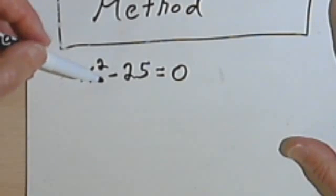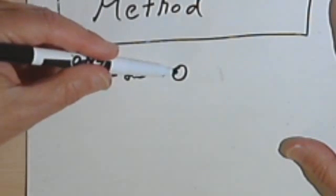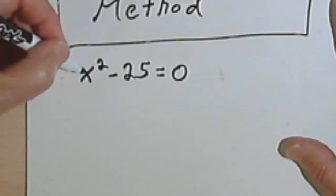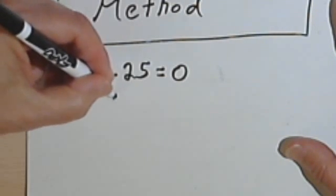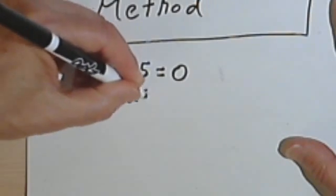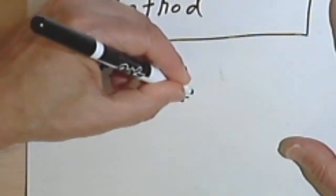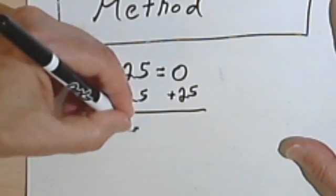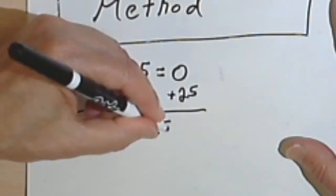I've got x squared minus 25 equals 0 and I want to find out what x is. So the first thing I'm going to do is isolate the x squared, which means in this case I'll add 25 to both sides. That's going to give me x squared equals 25.